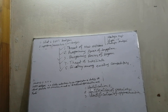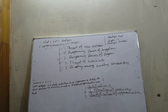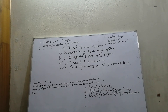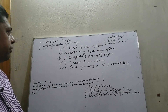Rivalry among existing competitors: this force is the major determinant of how competitive and profitable an industry is. In a competitive industry, firms have to compete aggressively for market share, resulting in low profit. Rivalry among competitors is intense when there are many competitors, exit barriers are high, industry growth is slow or negative, products are not differentiated and can be easily substituted, competitors are of equal size, and there is low customer loyalty.